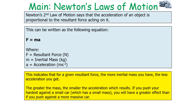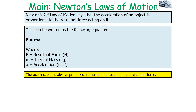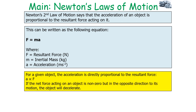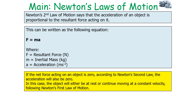If you push your hardest against a small car with a small mass, you'll have a greater effect than if you push against a more massive car. The resultant force acting on the object is the vector sum of all the forces acting on it. The acceleration is always produced in the same direction as the resultant force, and this law only applies to objects with a constant mass. For a given object, the acceleration is directly proportional to the resultant force. If the net force is non-zero but in the opposite direction to the motion, it will cause the object to decelerate. For a constant force, the acceleration is inversely proportional to mass. If the net force acting on an object is zero, the acceleration will also be zero, and the object will either be at rest or continue to move at a constant velocity, following Newton's first law.